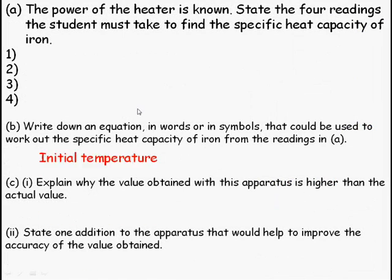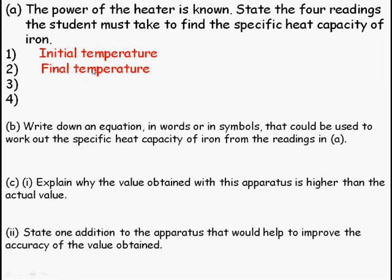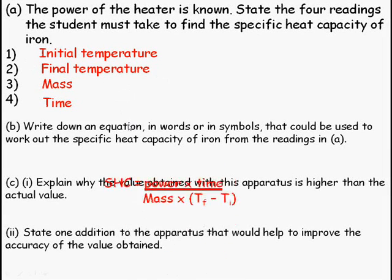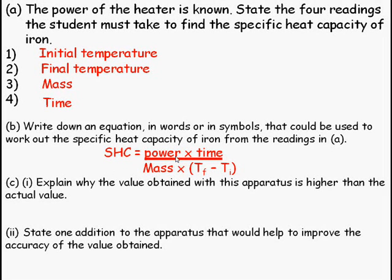Reasonably simple question, but easy to make mistakes on. There are four readings that you're asked to take here, four readings. What are they? You need to know the initial temperature and the final temperature. Those are the two things you would have to measure. You need to measure the mass and the time this took, because it tells you the power. You're going to have to know the time it took to know the amount of energy that went into it. Write down an equation in words or symbols. It could be used to work out the specific heat capacity from the readings in A. So you've got to take these readings and make a formula from it. So specific heat capacity is equal to power times time divided by mass times the change in temperature, which is Tf minus Ti. You could put delta T here, but it's better to explain in more detail exactly what the calculation you're going to do.